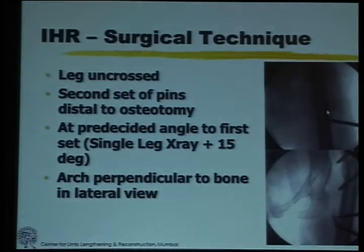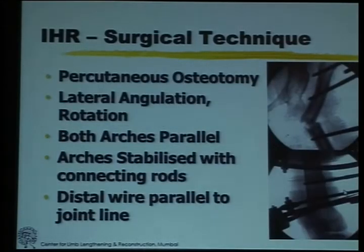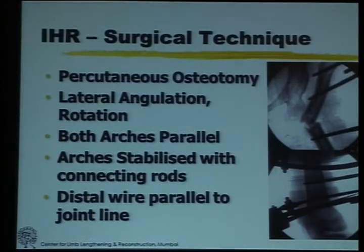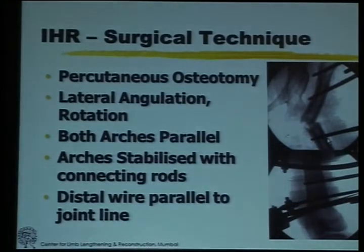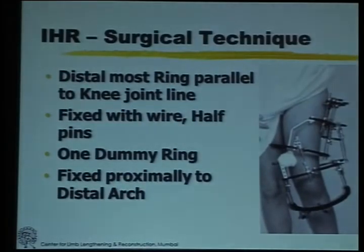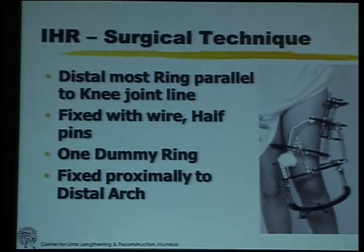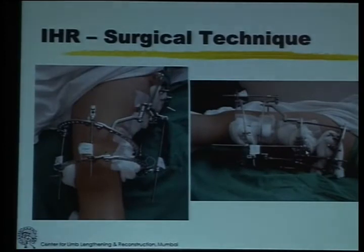So like in that example, if it was 60 degrees, the angle between these two sets of pins should be 60 degrees. We then do a percutaneous osteotomy, complete the lateral rotation and some amount of rotation. What this does is get both sets of pins parallel, which are connected externally to arches. These arches are stabilized with connecting rods and then we proceed for the distal fixation where the wire is parallel to the joint line. The two arches on top are parallel to each other, and the distal and proximal fixation are at an angulation to each other which will be corrected at a later date once the lengthening is done.